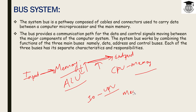The path through which the data and instructions flow is called the bus of the computer, or system bus. The system bus is a pathway composed of cables and connectors used to carry data and instructions between the computer microprocessor and the main memory.